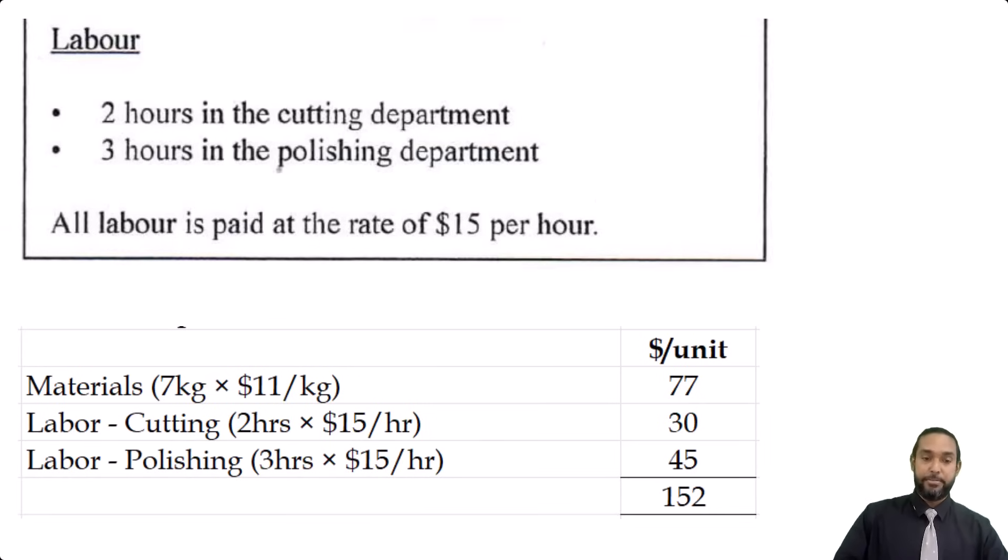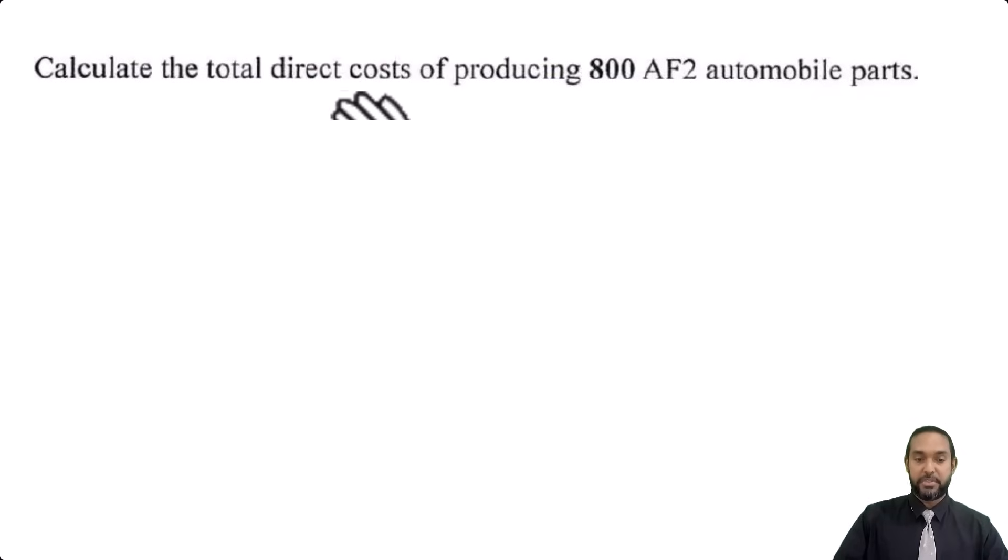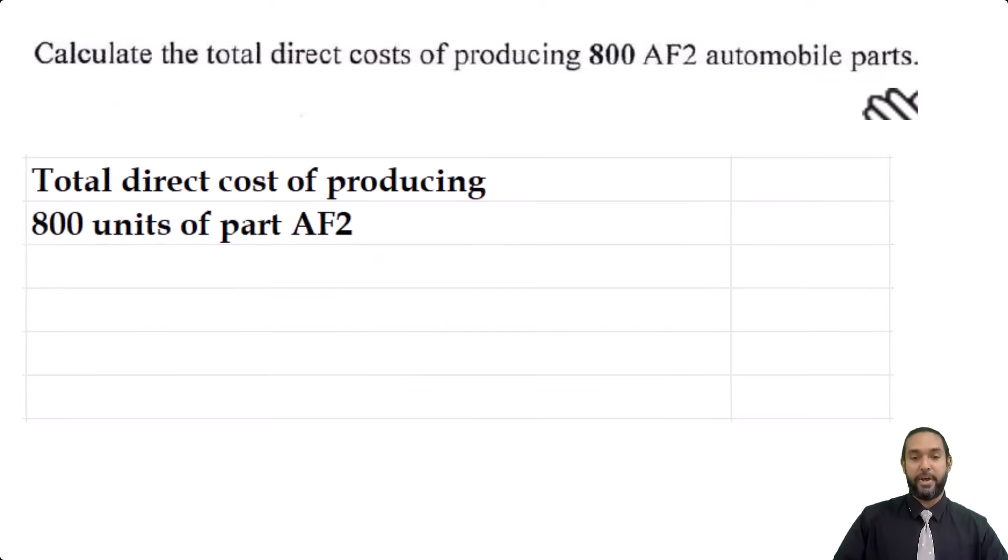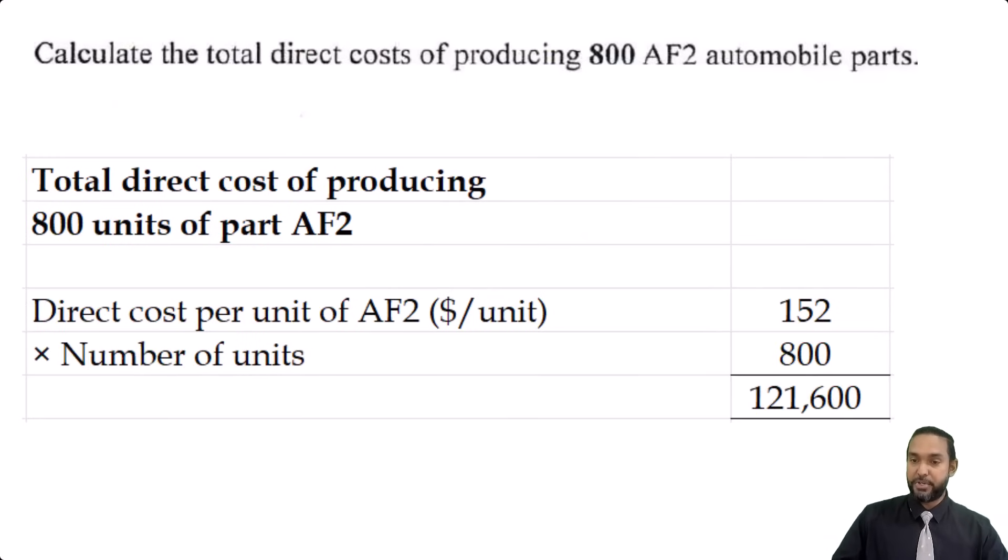Now, the second part of this question says, Calculate the total direct cost of producing 800 of these parts. Again, I'm not sure why this is in an accounts paper. This should be in a math paper, but okay. Total cost of producing 800 units. What we're going to do is take the cost of producing one, multiplied by 800, and we're going to get $121,600. Okay, that's it for part A. Let's take a look at part B.